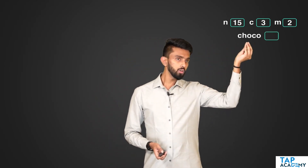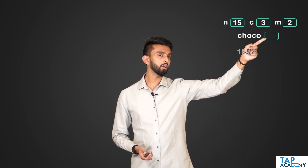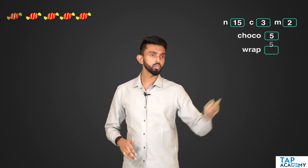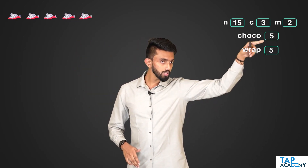Listen carefully — we have to come up with an algorithm. My algorithm is very simple. The values given are N=15, C=3, M=2. I will create a variable called Choco — the number of chocolates Bobby can initially buy — initialized to N divided by C, which is 15 divided by 3 equals 5. Then I create a variable called wrap, initialized to choco, because the number of chocolates equals the number of wrappers.